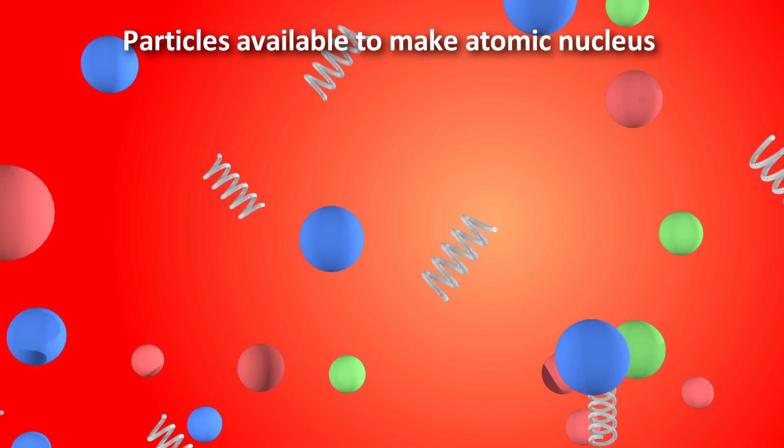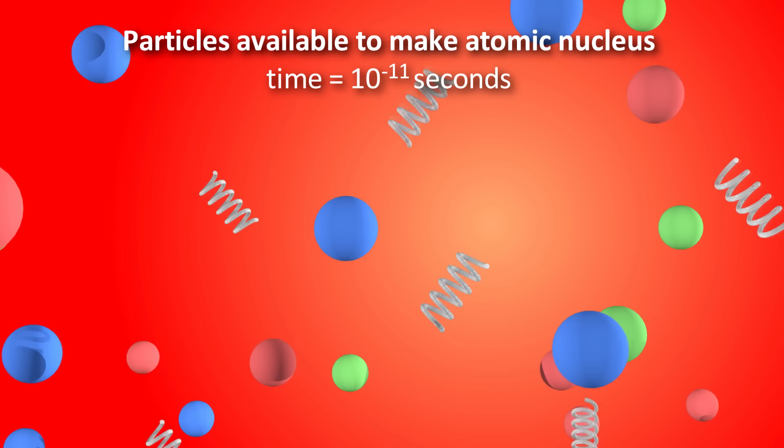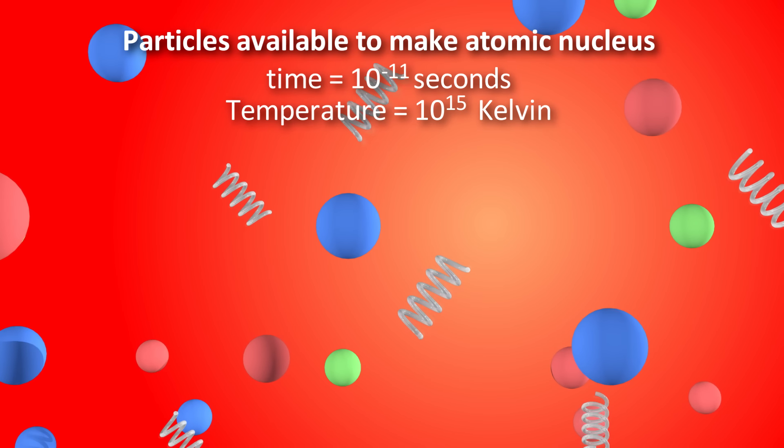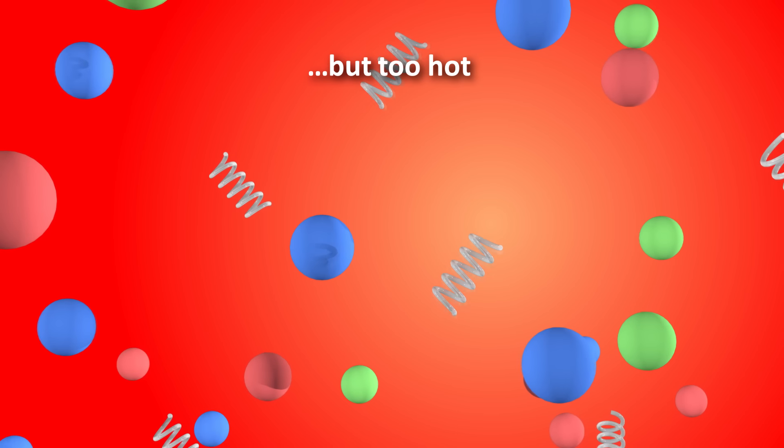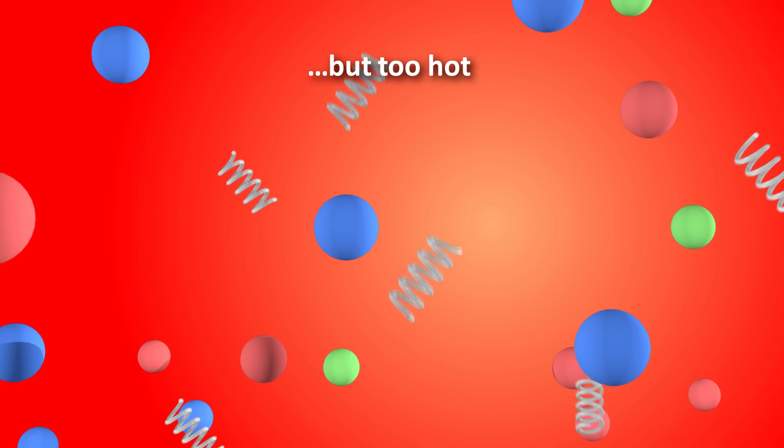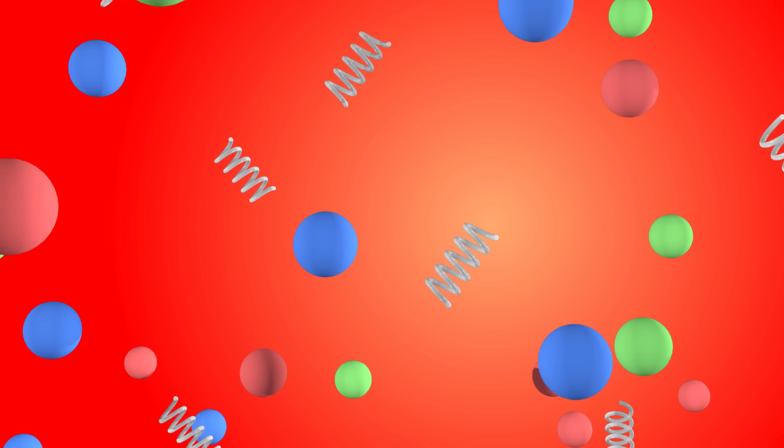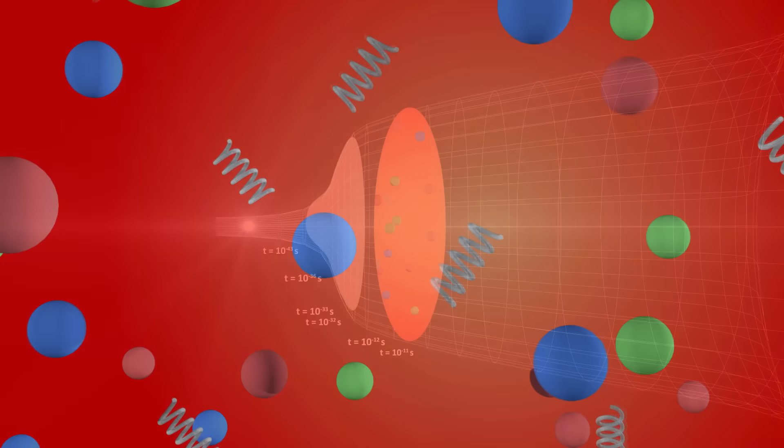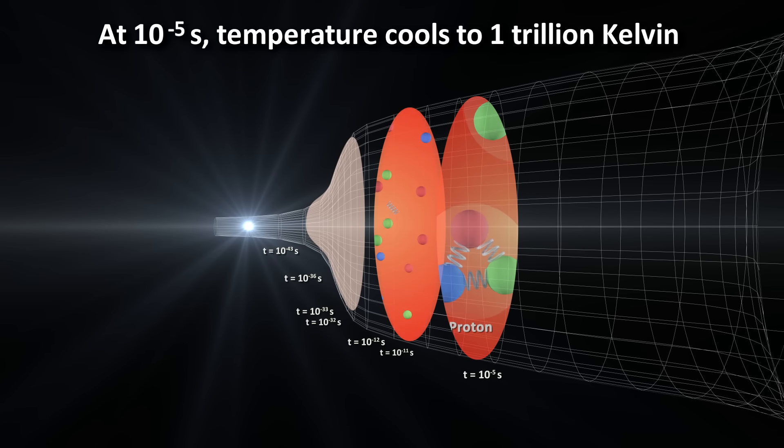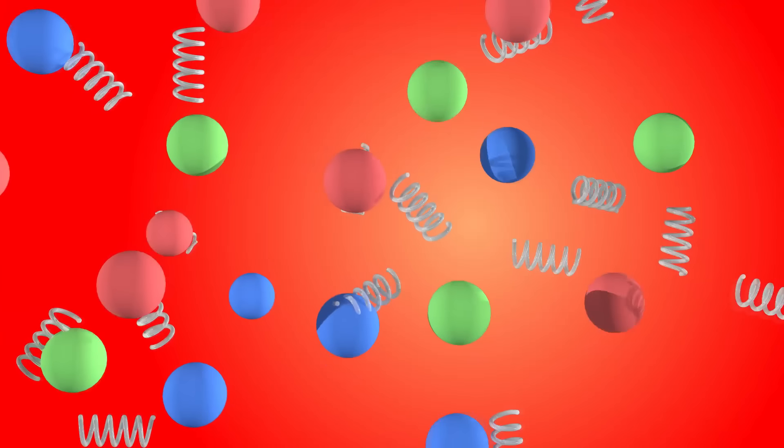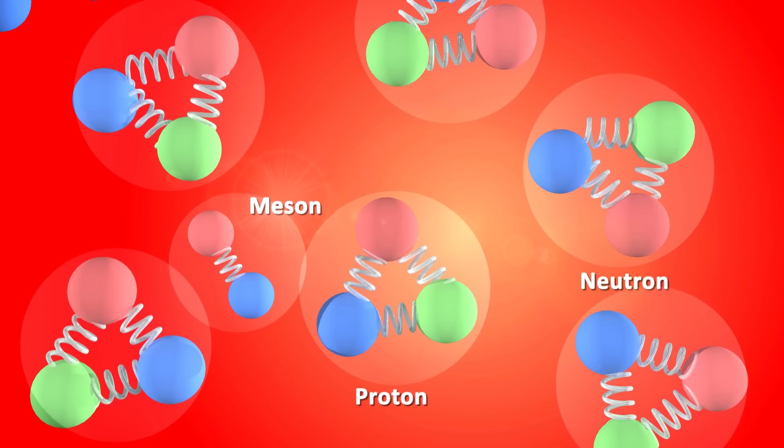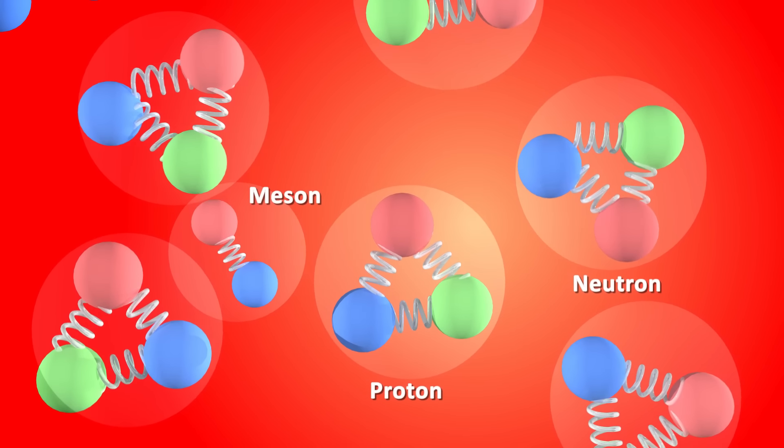At this point, we have all the building blocks for atoms. Again, the time is around 10 to the negative 11 seconds after the beginning, and the temperature of this universe is around 1 quadrillion kelvin. The universe is however still too hot for the quarks to combine together to form hadrons, like protons and neutrons. This changes as the universe keeps expanding and further cooling takes place. As temperatures cool to around 1 trillion kelvin, at 10 to the negative 5 seconds, the quark plasma turns into a hadron gas, consisting of protons and neutrons and some mesons. The mesons are a combination of quark-antiquark pairs that eventually decay into photons and electrons.